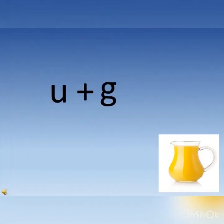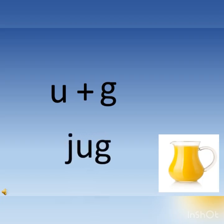Children, U says a plus G says g. So when they are together, they make the sound ag. And the word is j, ag, jug. J, ag, jug.